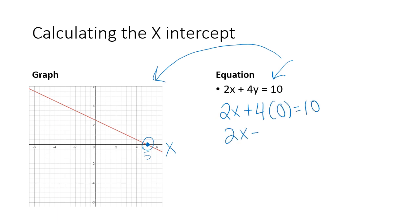2x plus zero equals 10, 2x equals 10, x equals 5. And look, they correspond.